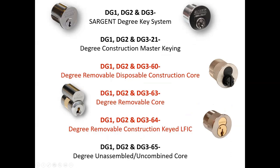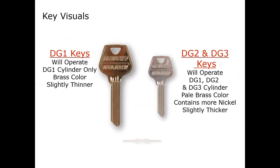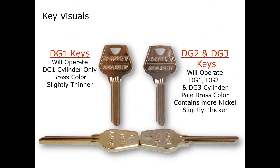You can get DEGREE in all three levels as a conventional cylinder. You can get it with lost ball by specifying 21-dash, or with plastic disposable cores. For Sargent large format interchangeable core, the 60-dash is for plastic disposable, 63-dash is your final permanent product — DG1, DG2, or DG3 — and 64-dash is for construction cores. They use the same plugs or cores as a standard large format interchangeable core cylinder, and can be uncombinated. Visually, DG1 keys are slightly thinner and more brass in color, while DG2 and DG3 keys are slightly thicker and more pale because they are nickel silver.